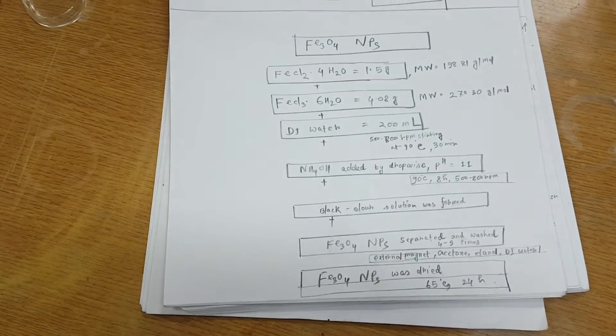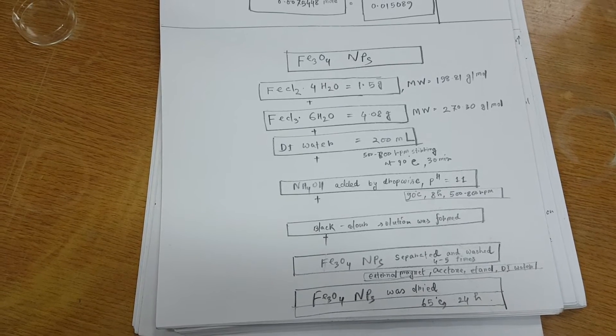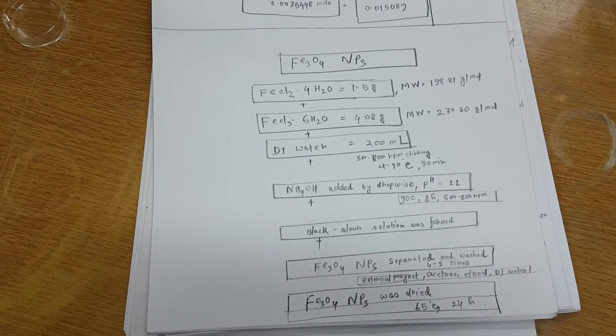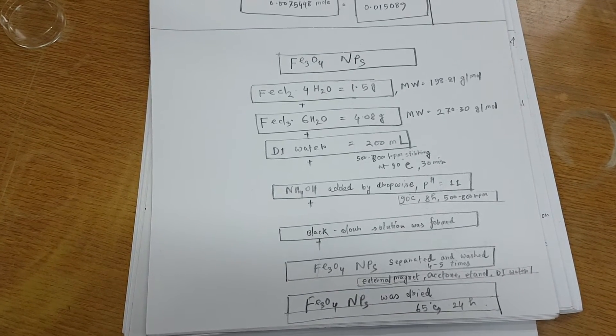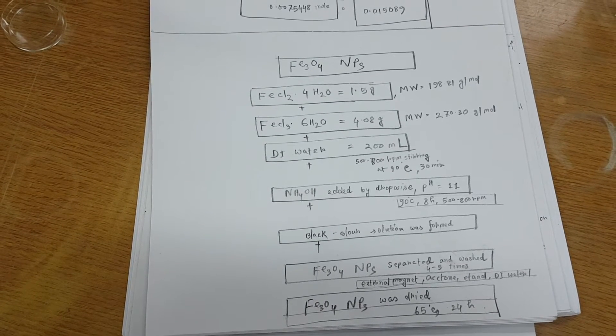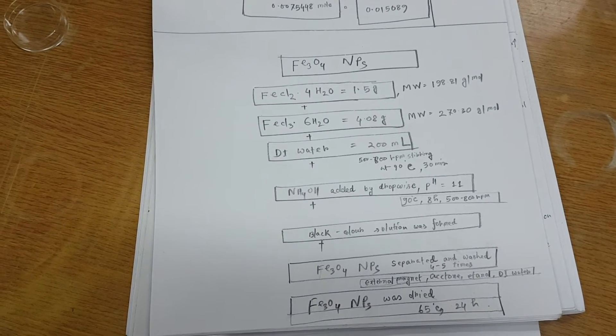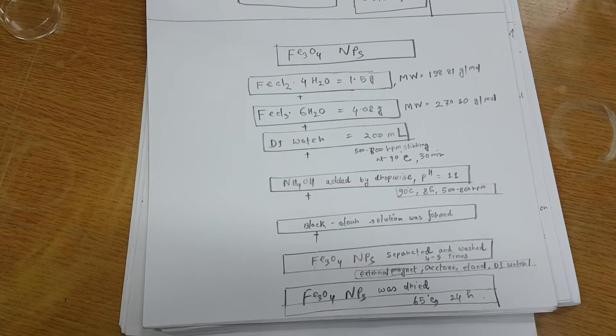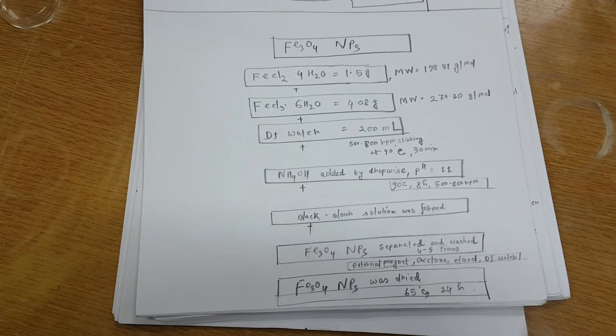Then I added ammonium hydroxide or ammonia solution. It should be drop wise and pH goes to 11. And temperature, I set this temperature in constant at 90 degrees Celsius for 8 hours and the high mechanical steering.